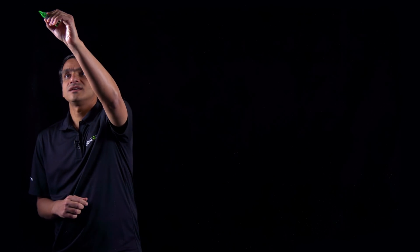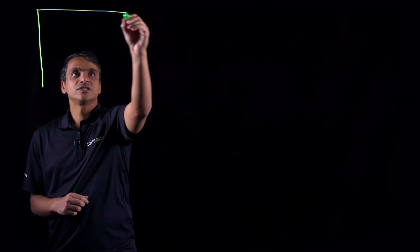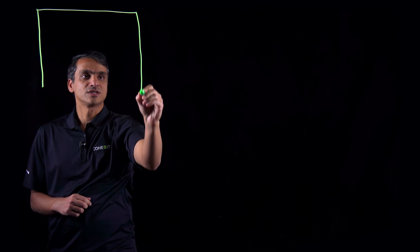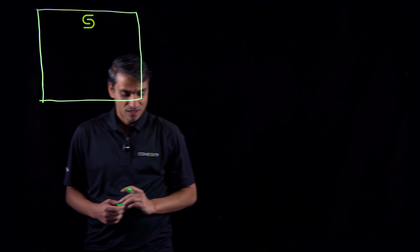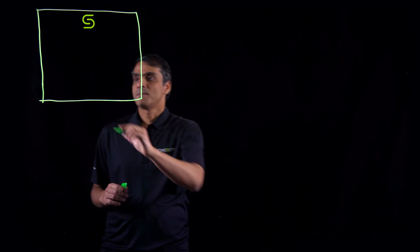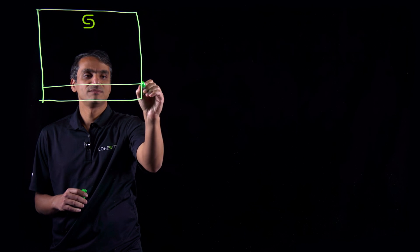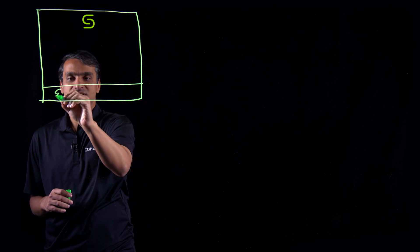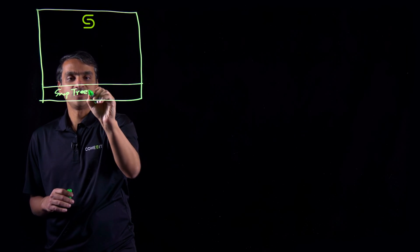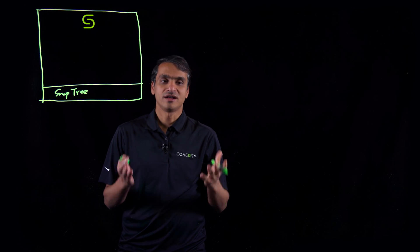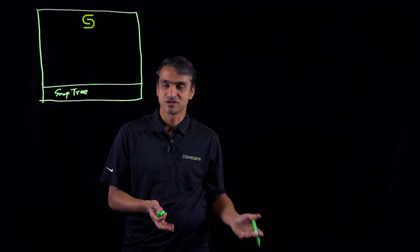Cohesity is a distributed hyper-converged secondary storage platform for all your secondary workloads. It is driven by the SnapTree technology which enables backups that are fully hydrated yet space efficient.